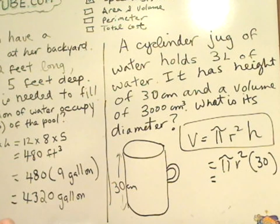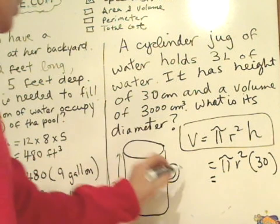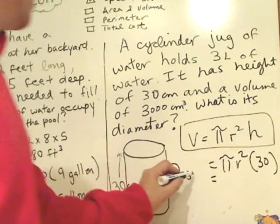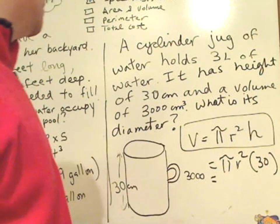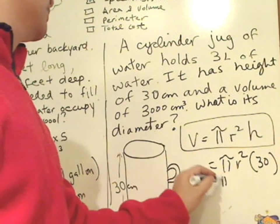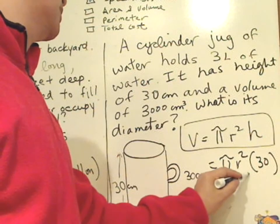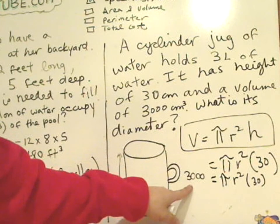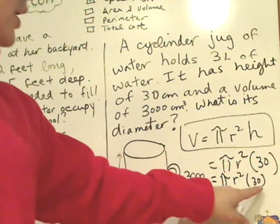We also know the volume, too. The volume is 3,000 centimeters. Alright. So on this side, we know the volume is 3,000. We know the height.